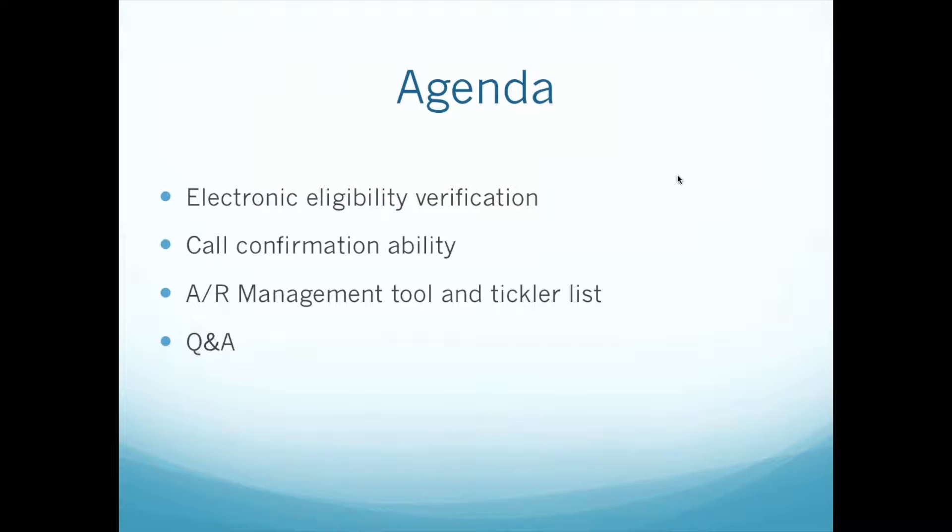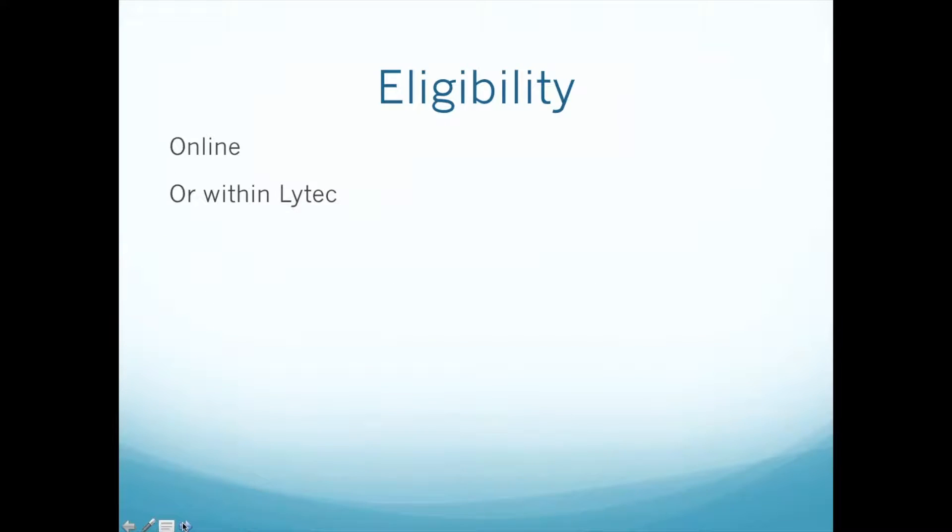We're also going to have a Q&A session. Eligibility can happen in two separate ways. One is by having an online portal. One of the partners we have is Relay Health, and they give us a portal where you will be able to check eligibility. We call this the advanced eligibility, and that eligibility gives you more information, as we're going to see now.